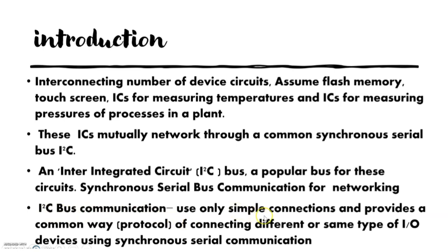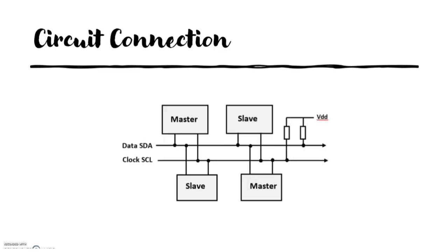I2C uses very simple connections and provides a common protocol for connecting different or same types of IO devices using synchronous serial communication. I2C follows a master-slave type of communication. There are two lines in the bus: one is data — SDA — which indicates bi-directional data transfer between master and slave. Multiple masters and multiple slaves are possible, but at any particular instant there will be only one master, which initiates the data transfer and provides the clock signal.